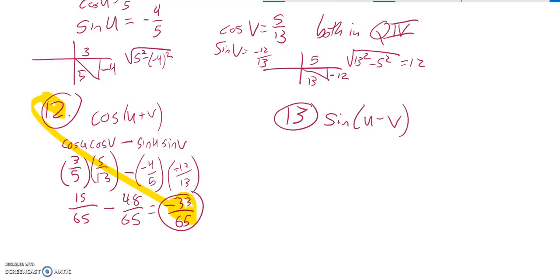And then for 13, I'll split it up using that addition relationship. So it's sine of the first one, cosine of the second one, same operator, cosine of the first one, sine of the second one.